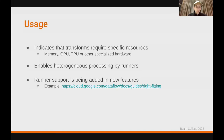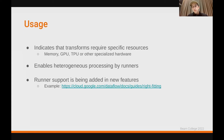Now that a pipeline can be augmented with hints, the runners may make different decisions about how to execute these pipelines. This will depend on the features of individual runners, and some runners have started to add support for resource hints. One example is the right-fitting capabilities in Google Cloud Dataflow, which was recently announced.